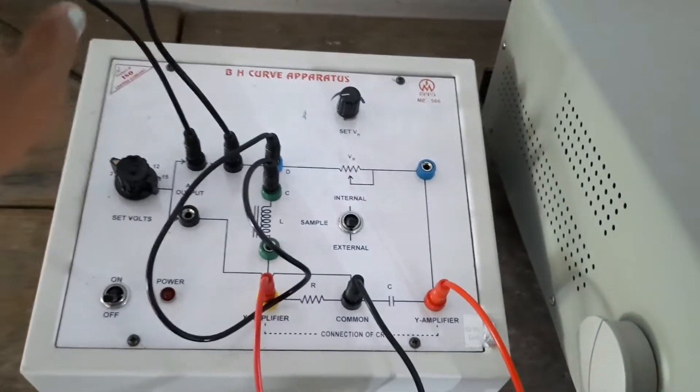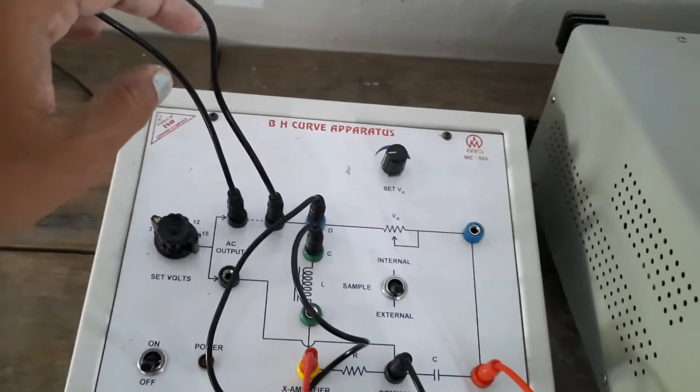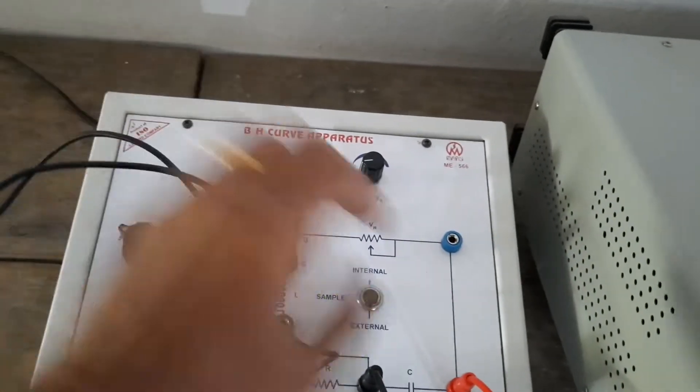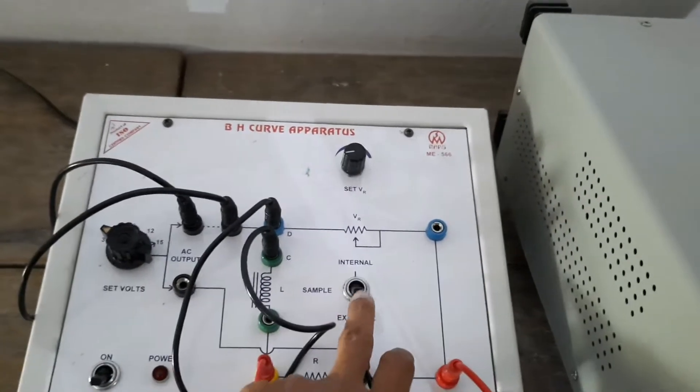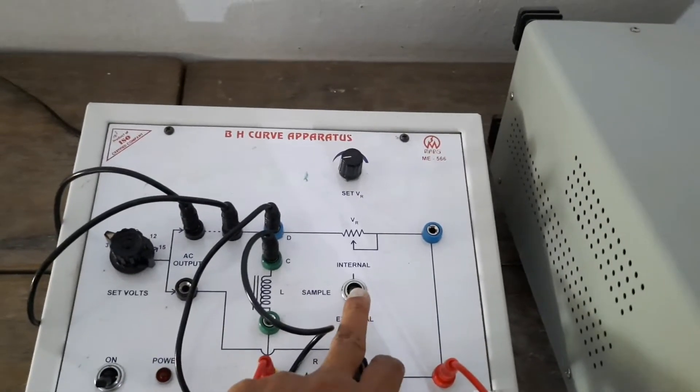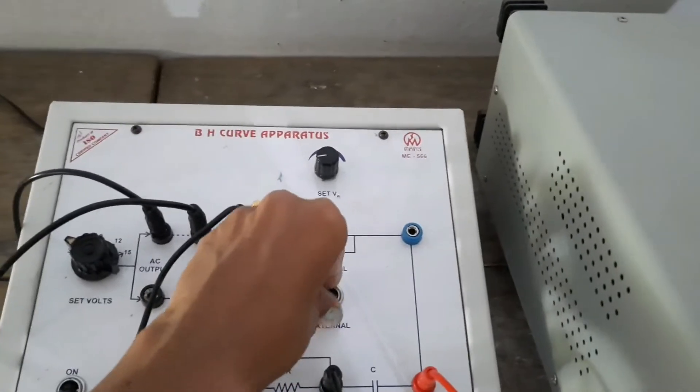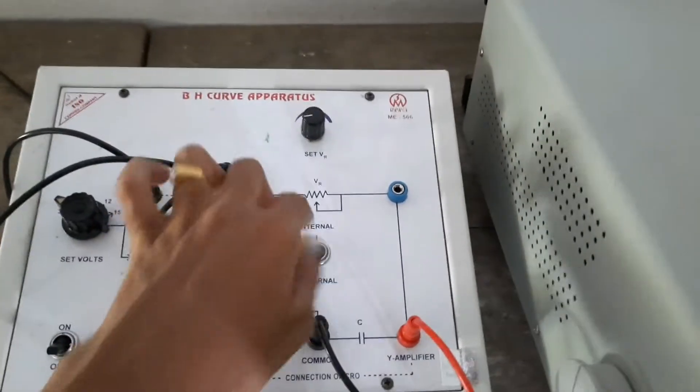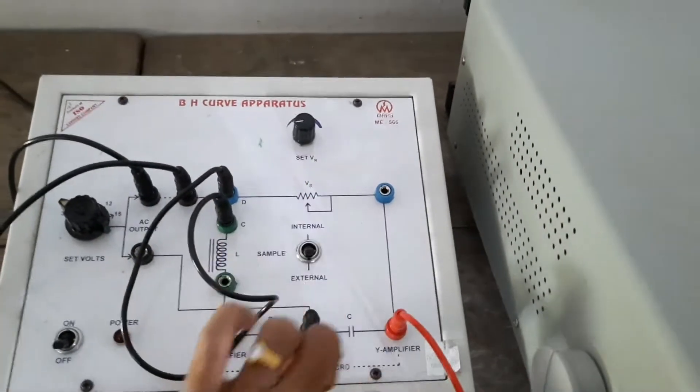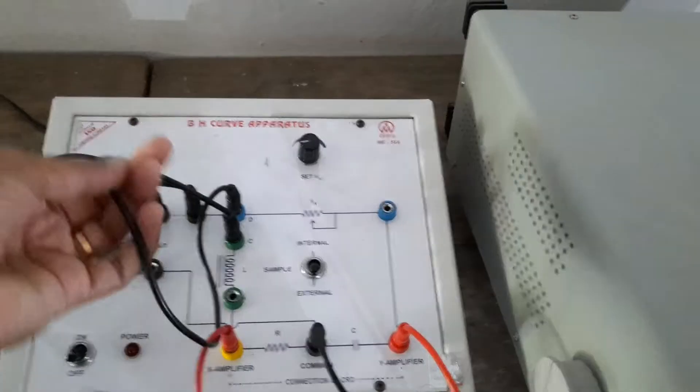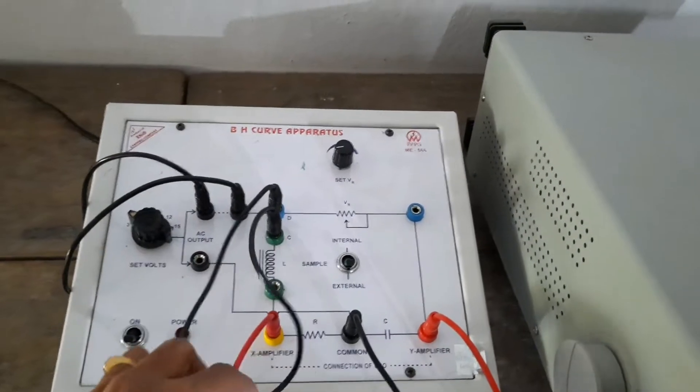According to that we have to make AC output and here variable voltage. Internal sample is inbuilt. So if you have to keep internal, if you are using external sample then connection will be different. So this is internal, already we can make the connections according to that.